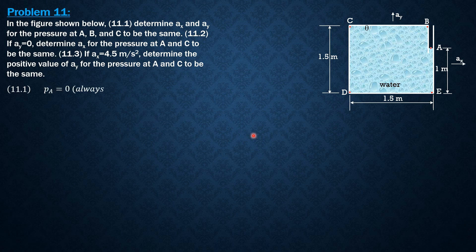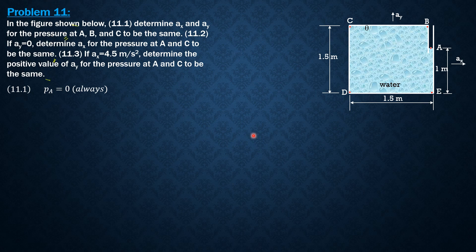So pressure at A is always 0. Therefore, AX must be 0 so that it cannot affect the surface, which would not make all the pressure at A, B, and C to be the same. So AY should be negative G so that the pressure at B and C will be 0.